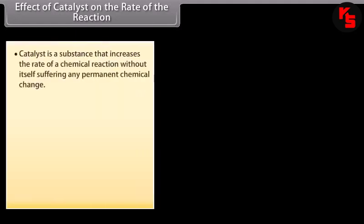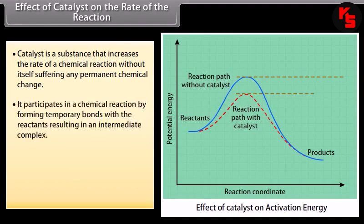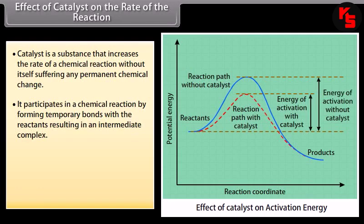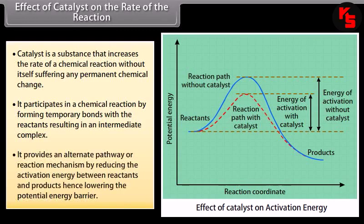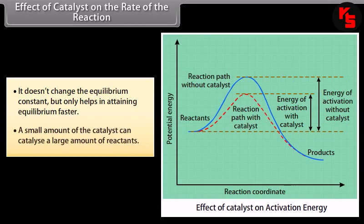A catalyst increases the rate of a chemical reaction without itself suffering any permanent chemical change. It participates by forming temporary bonds with reactants, resulting in an intermediate complex. It provides an alternate reaction pathway by reducing the activation energy between reactants and products, hence lowering the potential energy barrier. It does not change the equilibrium constant but only helps in attaining equilibrium faster. A small amount of catalyst can catalyze a large amount of reactants.